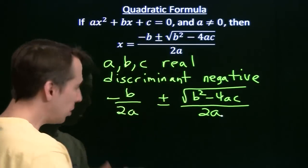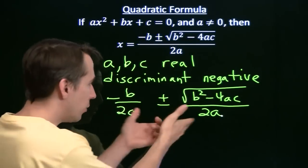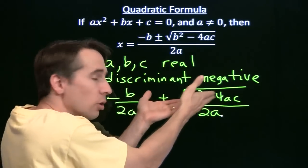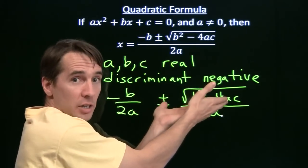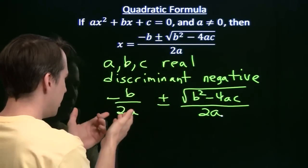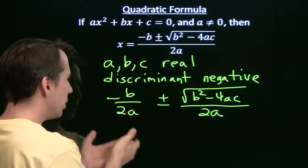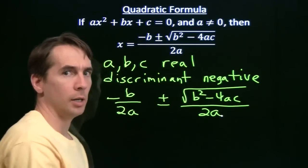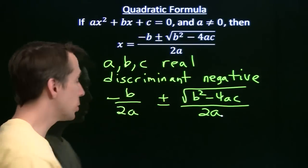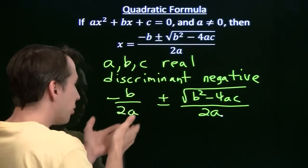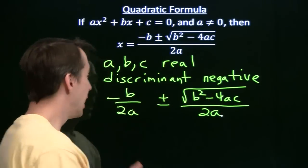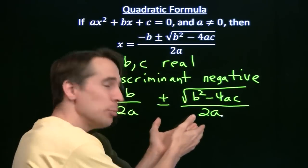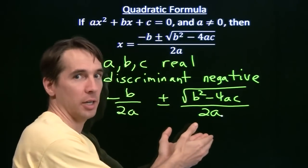Now, if a, b, and c are real, then negative b over 2a is real. And the denominator is real. If the discriminant is negative, we know that we've got an imaginary sitting up there. So we've got something that's real plus or minus something that's imaginary. When we break those into two different roots, we've got the real thing plus the imaginary thing and the same real thing minus the same imaginary thing.